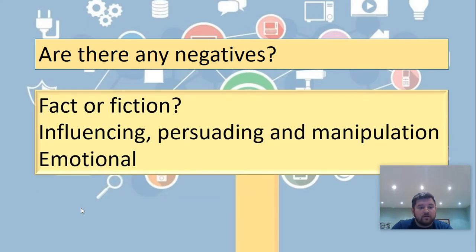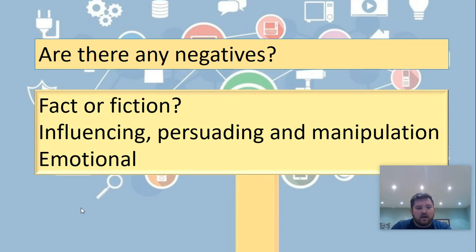Fact or fiction — can we trust everything that's there? Influencing, persuading, manipulation, emotional. Manipulation is an interesting one because we think about other people manipulating us, maybe saying things to get us to do things. That could be the same with an advertisement, and if you use fake or false information online, that could manipulate somebody to buy a product when actually it doesn't really do what they need it to.